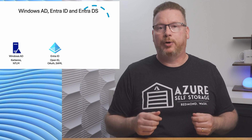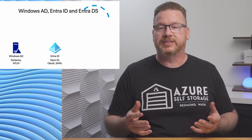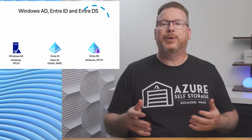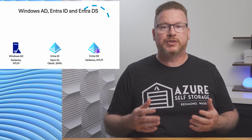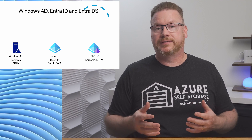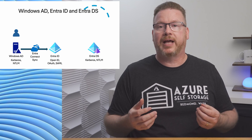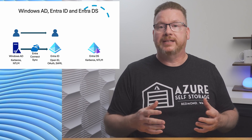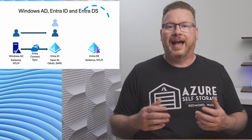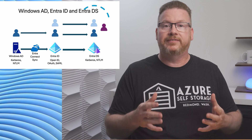Then we have Entra ID, the cloud-based directory service hosted by Microsoft. It's the directory service for Microsoft online services like Office 365 and Azure. It supports OpenID Connect, OAuth 2, and SAML for web-based authentication. And then we have Entra Domain Services — the Windows AD compatible service hosted by Microsoft. Just like Windows AD, it supports Kerberos and NTLM for authentication and other services like LDAP, DNS, and group policies. We can replicate identities, groups, and devices from Windows AD to Entra ID with Entra Connect Sync, creating hybrid identities or hybrid joined devices. Identities can also replicate from Entra ID to Entra Domain Services, or we can have identities native to Entra Domain Services.